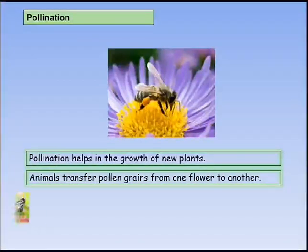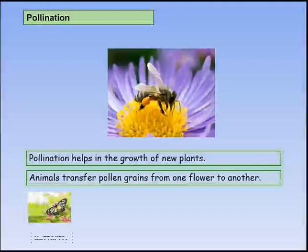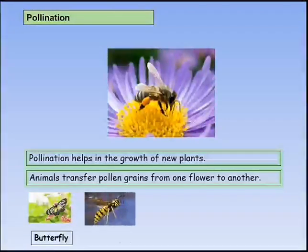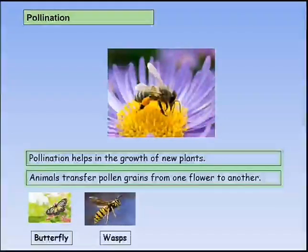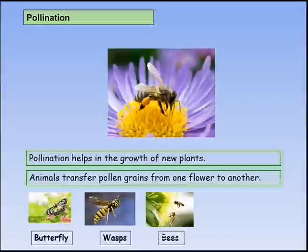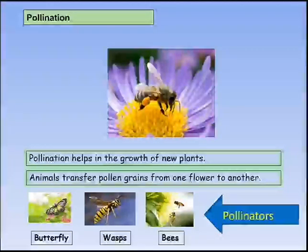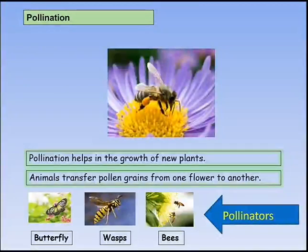Butterflies, wasps, and bees are some pollinators. Plants attract them through sweet nectar, a nice smell or fragrance, and colorful flowers.